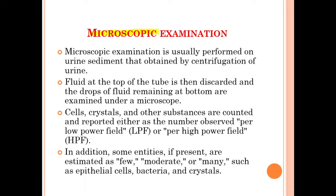The microscopic examination is usually performed on the urine sediments obtained by centrifugation of the urine. The fluid at the top of the tube is discarded and the drops of fluid remaining at the bottom are examined under a microscope. Cells, crystals, and other substances are counted and reported either as a number per low power field (LPF) or per high power field (HPF). Some entities, if present, are estimated as few, moderate, or many — such as epithelial cells, bacteria, and crystals.